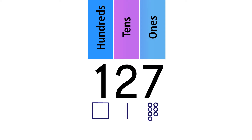We see that the 3 numbers are in different places and have different values. 1 has a value of 100, 2 has a value of 20, and 7 has a value of 7. When we add up all 3 values, we get 127.